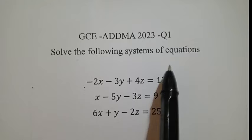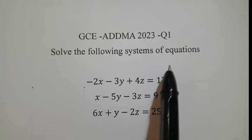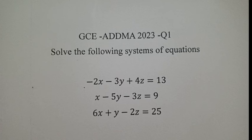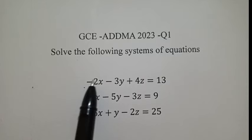We need to solve this system of equations right here. I'm not going to solve it using substitution method or elimination method. I will use what we call Cramer's rule. For Cramer's rule, you need to first get the coefficients — the numbers that are in front.